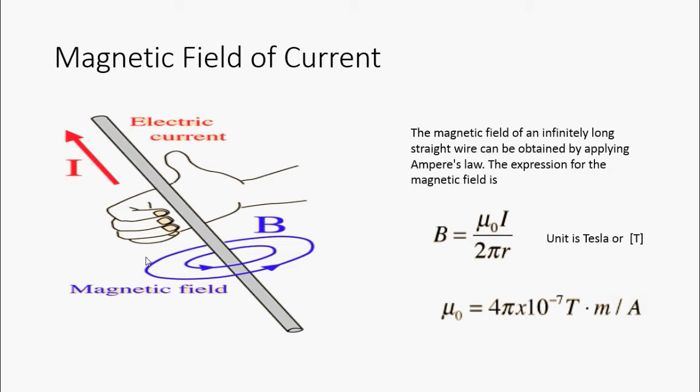As we can see in this equation, the longer the distance from a wire in which we want to calculate the magnetic field, the weaker the field will be.